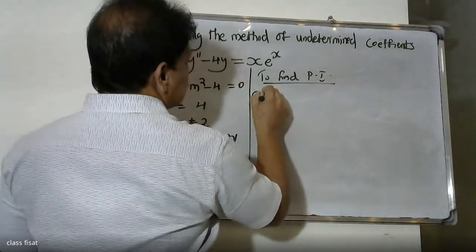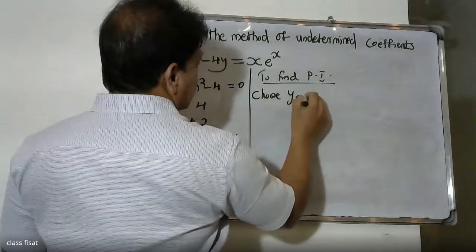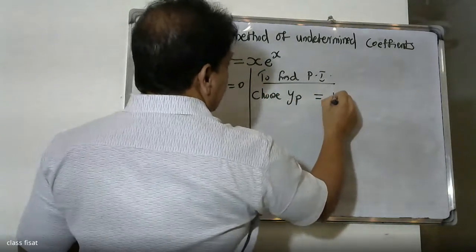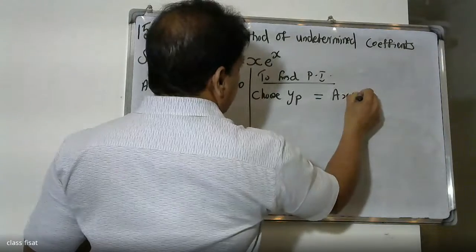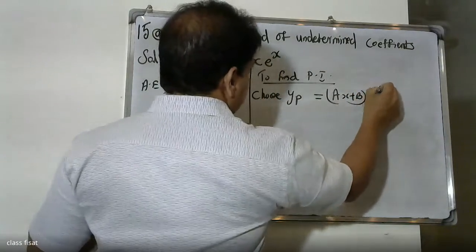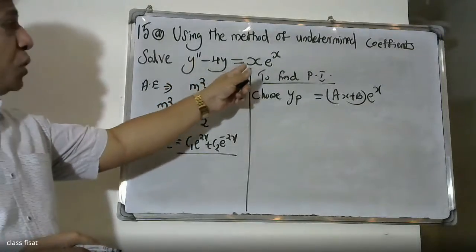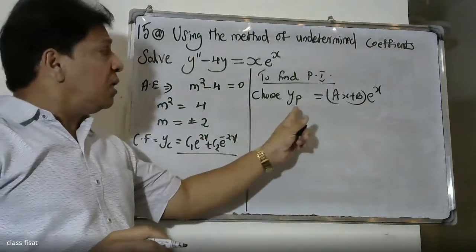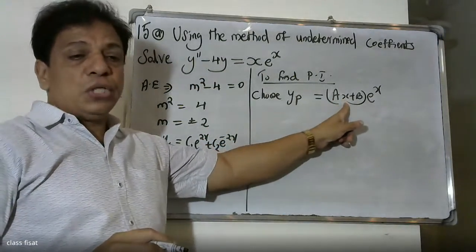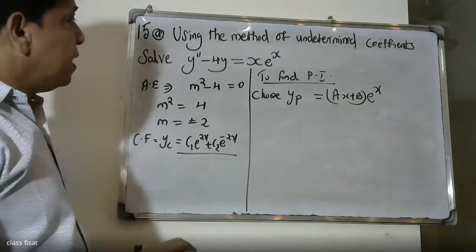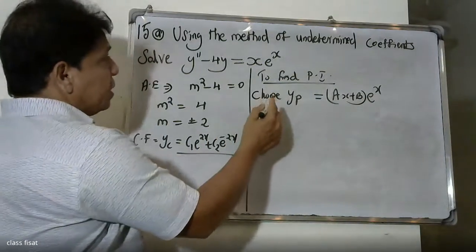We choose yp. In order to determine yp, since the right-hand side is in the form of x into e raise to x, we choose yp equal to ax plus b into e raise to x.